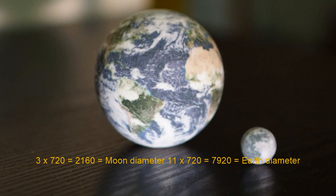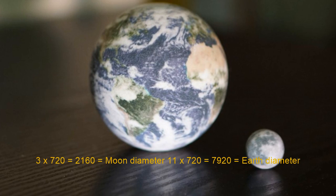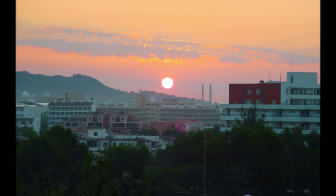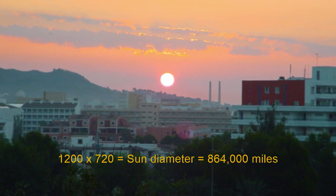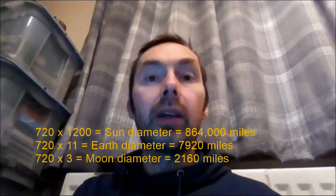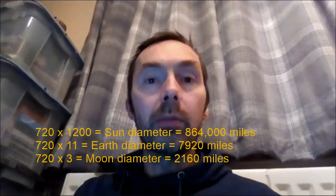While we're at it, how many times does this 720 mile unit go into the diameter of the Sun? 1,200! What are the odds that this 720 mile unit fits exactly into the diameters of the Sun, the Earth and the Moon by coincidence?